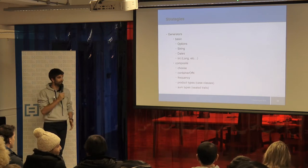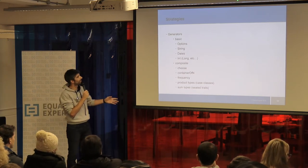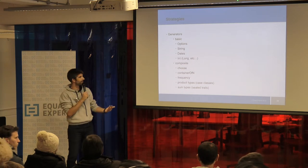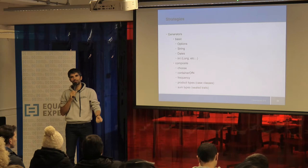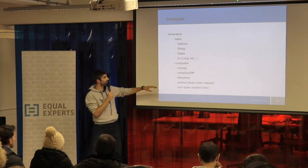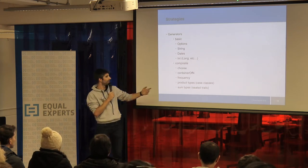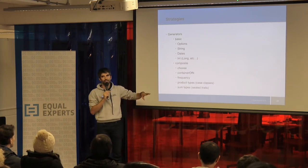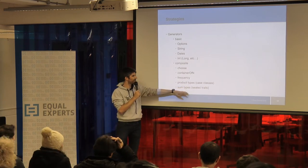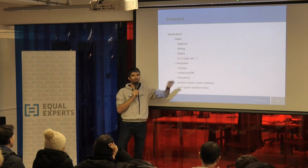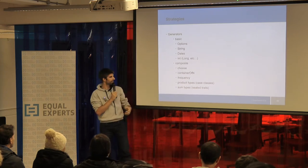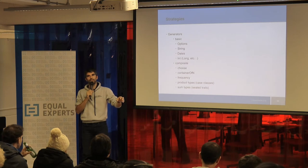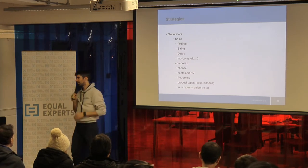The generators are definitely important — here are some examples. Options means if there's a value or not a value, so sometimes you generate something that has a value and sometimes it doesn't. Strings — you can generate small strings, empty strings, and lots of different things. You can compose them, like choosing from between values, or giving me a list of N values with something inside. There's a lot of things you can use. Product types are basically a class — a class usually aggregates more than one thing. Sum types are like enumerations — things that can be more than one thing, either this or that.